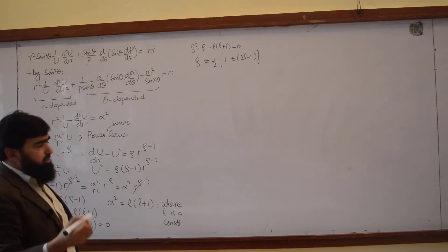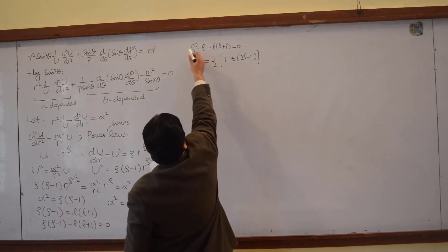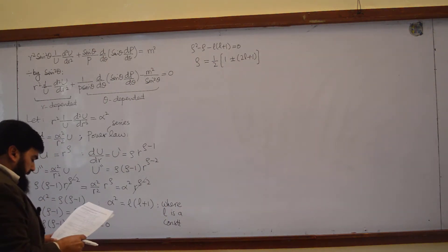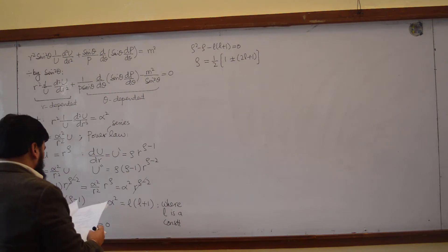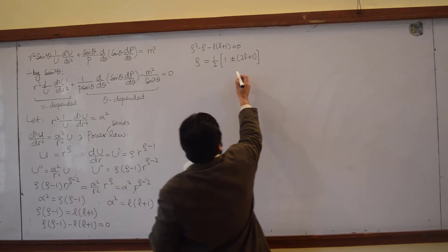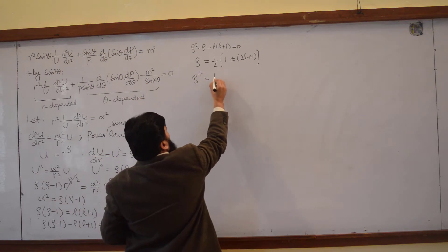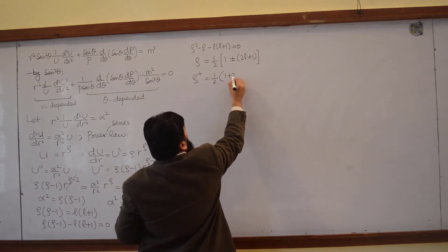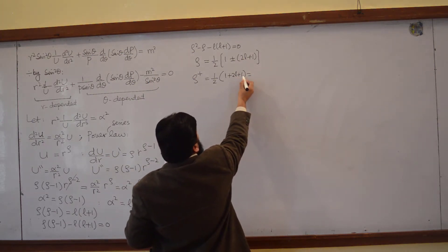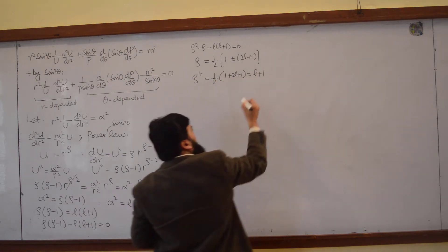Using the quadratic formula, x equals negative b plus minus root b squared minus 4ac over 2a, where a equals 1. Writing 2a and so on, rho is equal to this. If I write rho plus, taking the positive value, then it will be half times 1 plus 2l plus 1, which equals 2l plus 2. Taking 2 as common it will cancel and you get l plus 1.